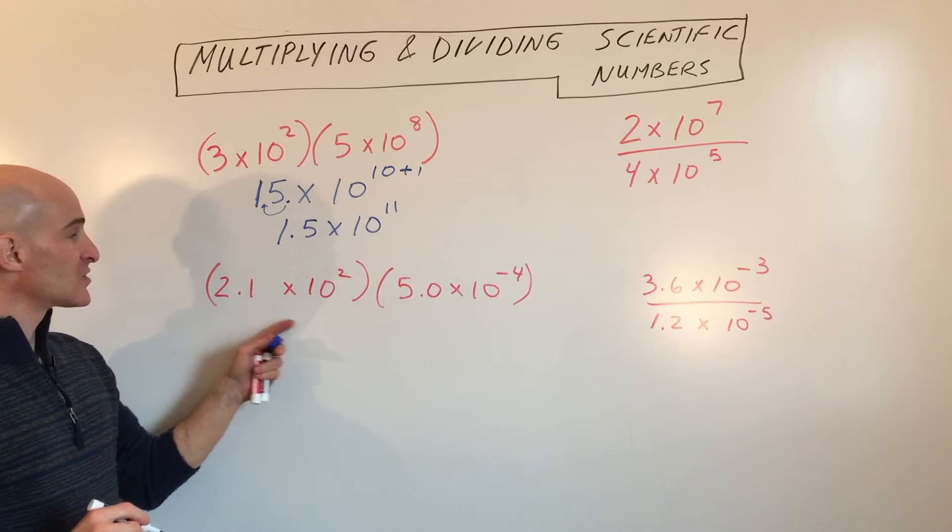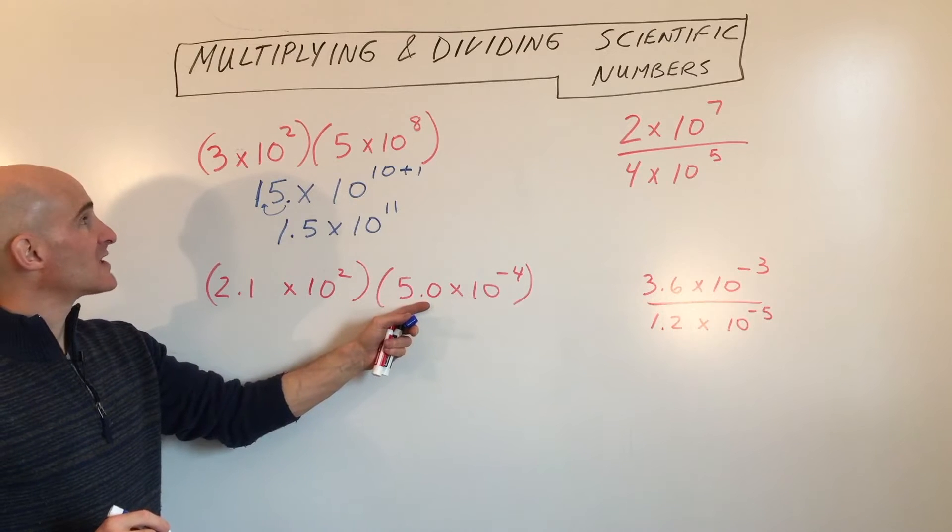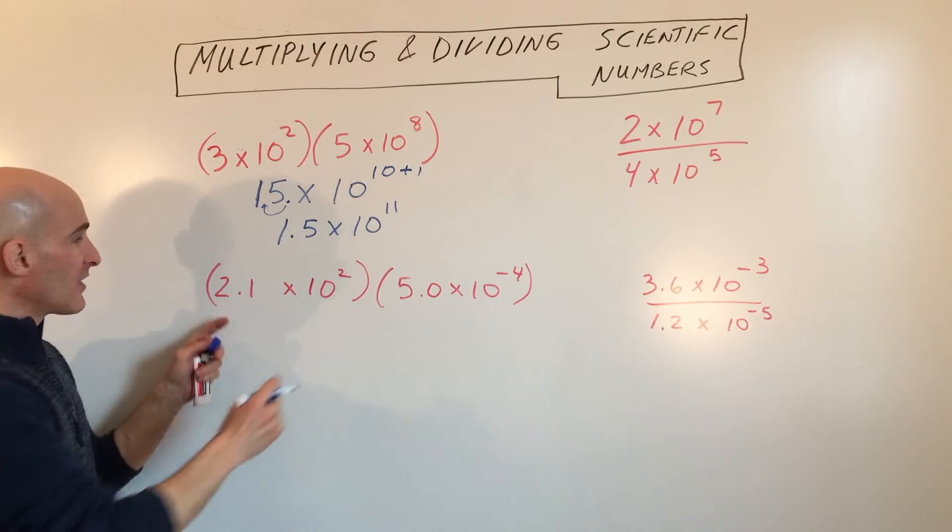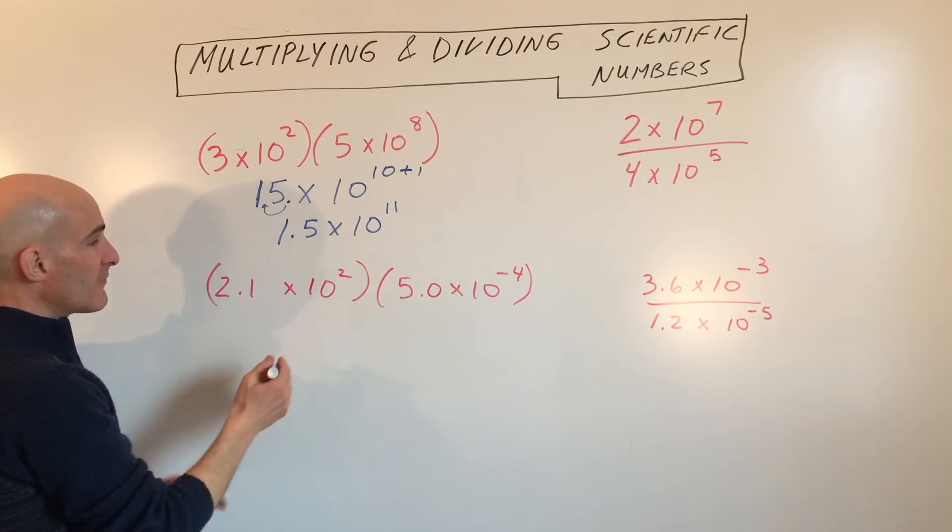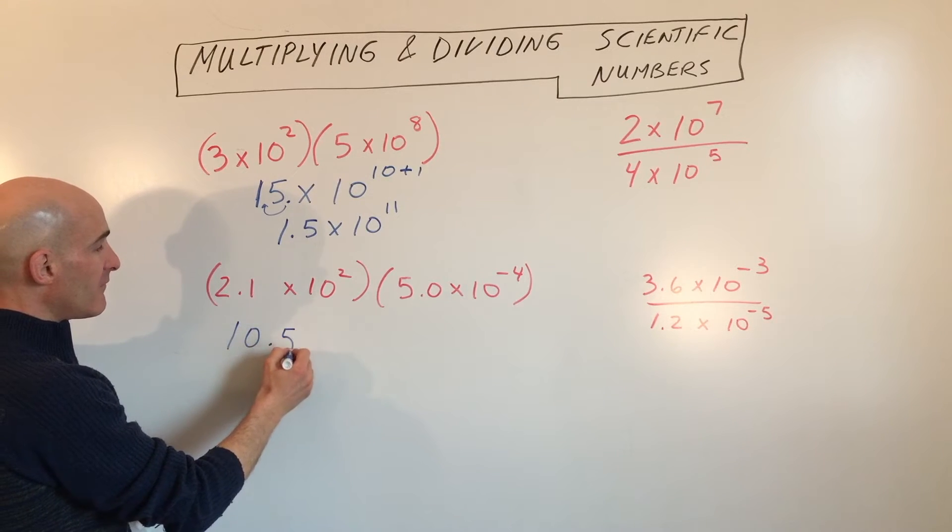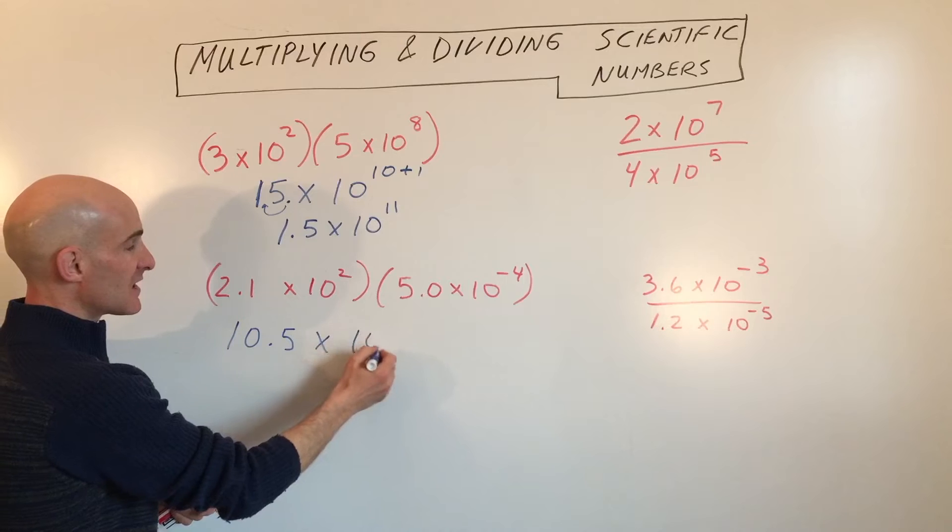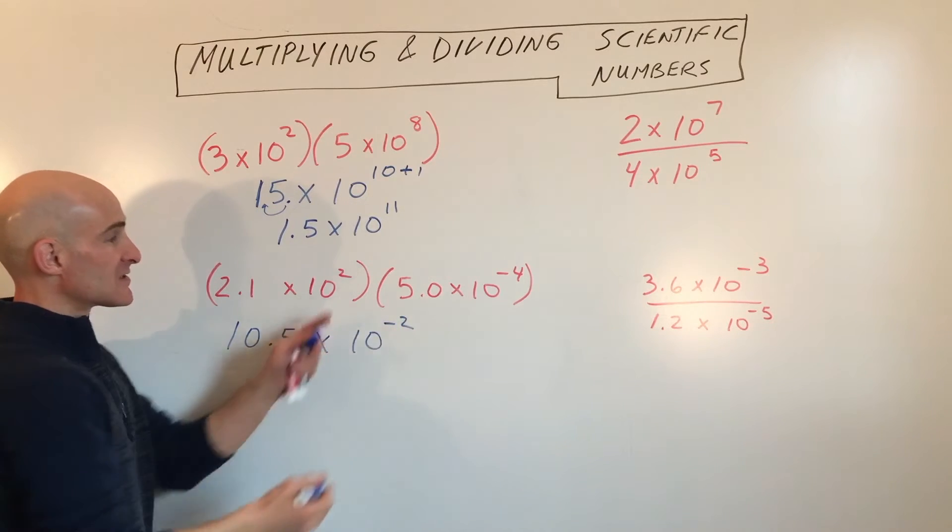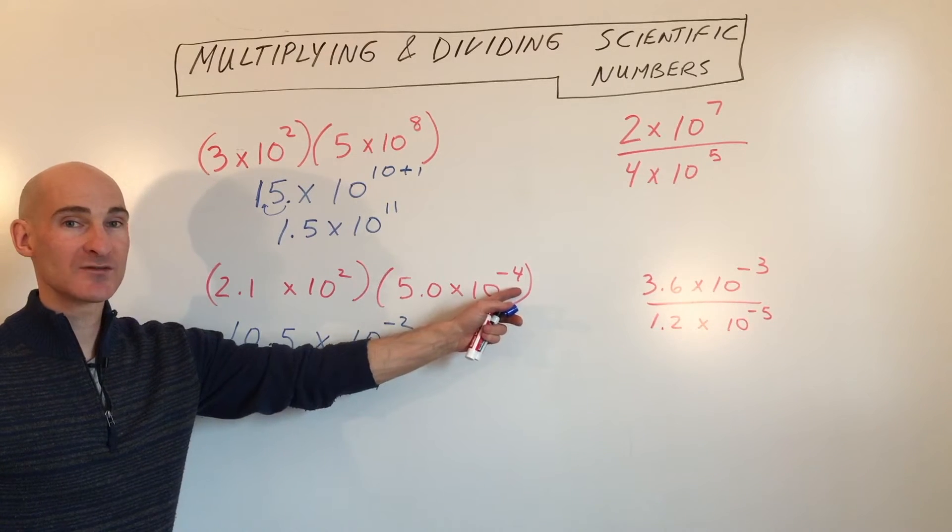Let's take a look at this one. So here we're multiplying two scientific numbers together. And we've got 2.1 times 5.0, which is 10.5 times 10 to the negative second, because 2 plus negative 4 is negative 2.